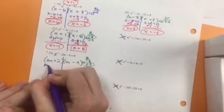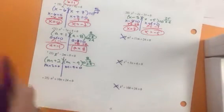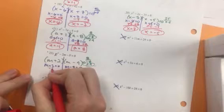Set both factors equal to 0. And solve for m. Get it by itself.